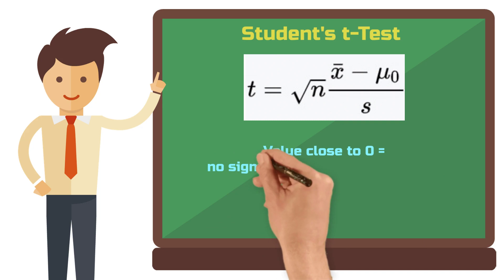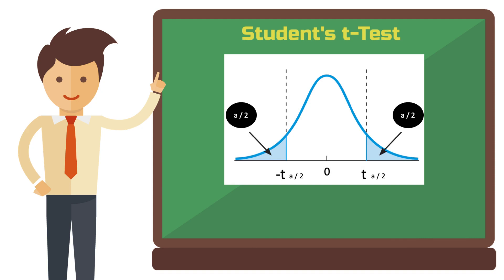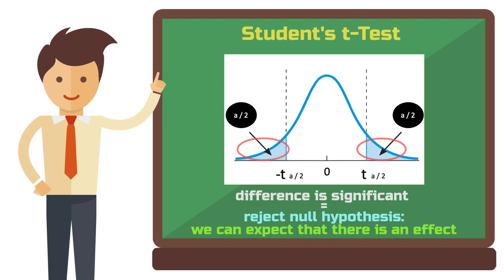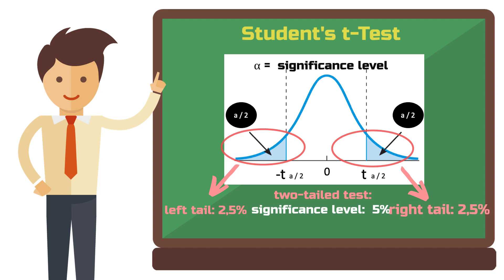If the t-value is close to 0, it indicates no significant difference between the sample mean and the hypothetical mean, so the target value. If the t-value falls in the critical region at the tails of the distribution, the difference is significant enough that the null hypothesis should be rejected, suggesting an effect. The critical regions are determined by the significance level. For a two-tailed test with a significance level of 5%, you would have 2.5% in the left tail and 2.5% in the right tail of the distribution.